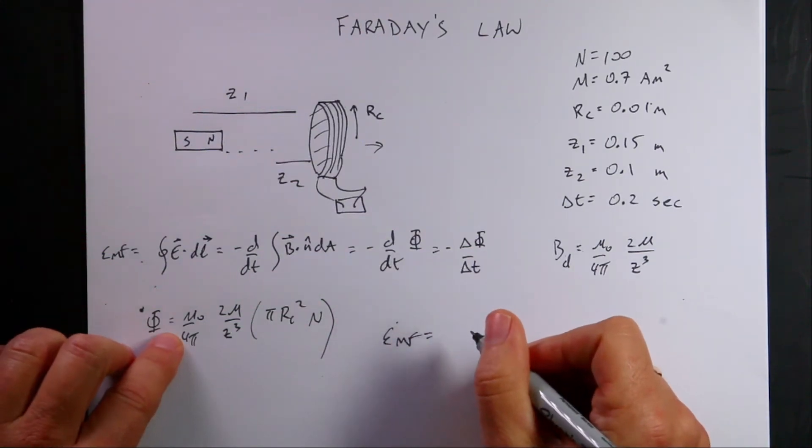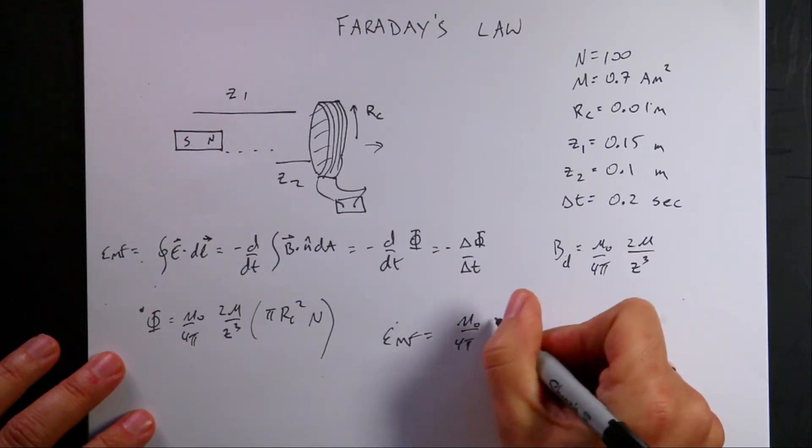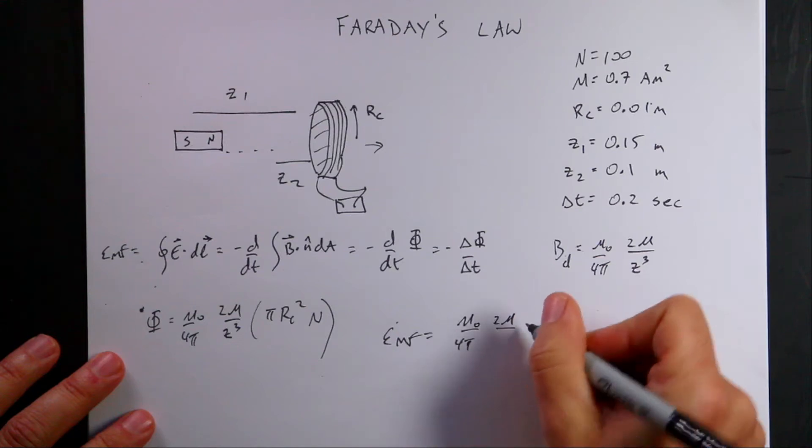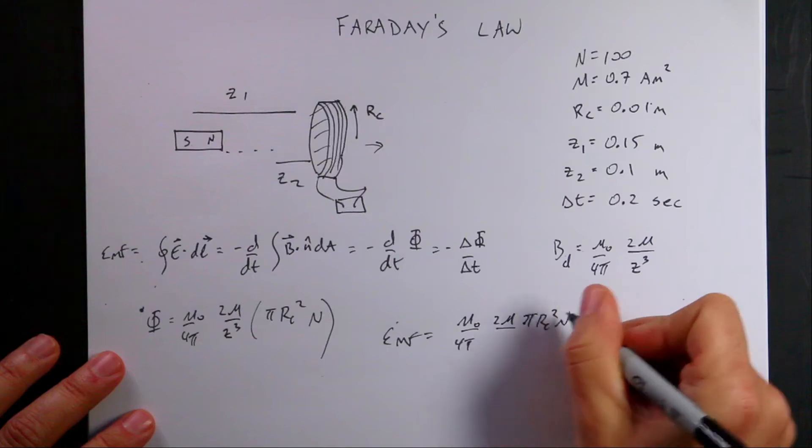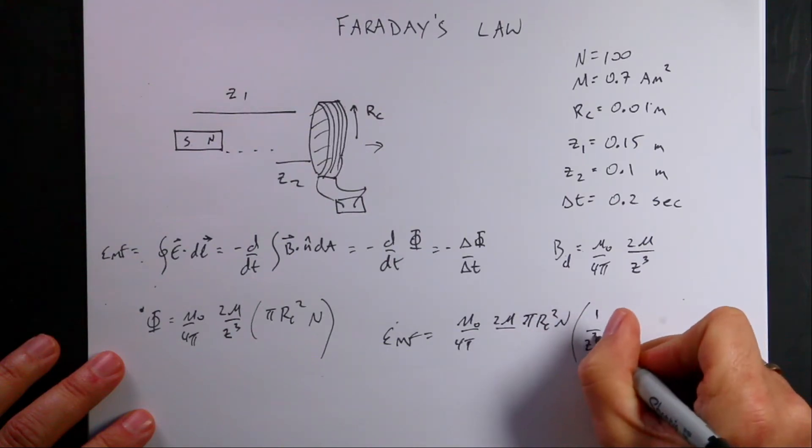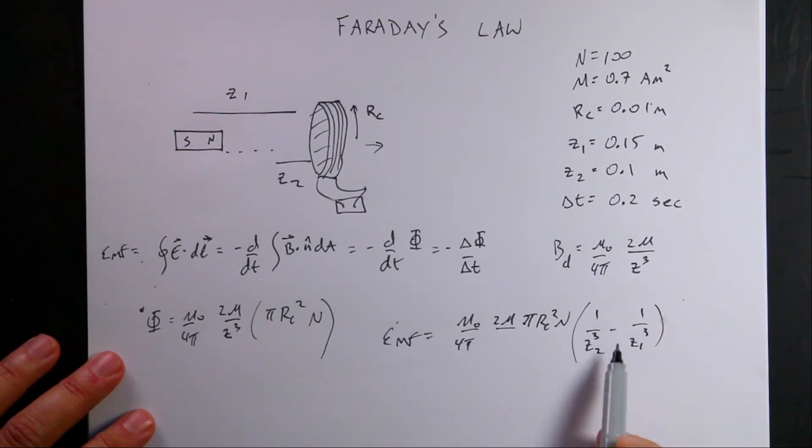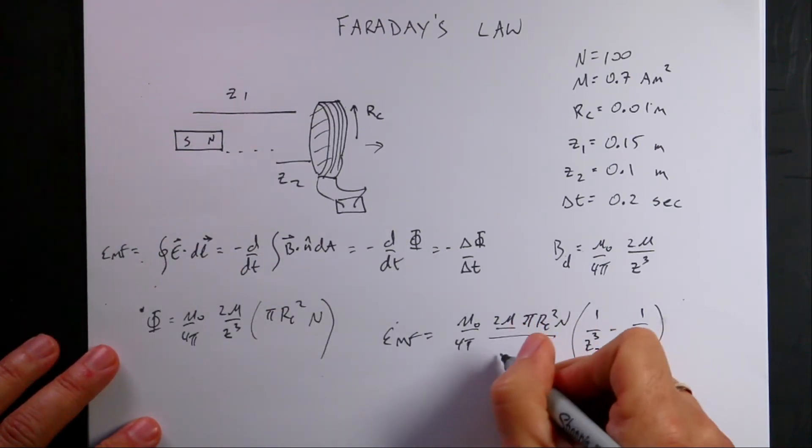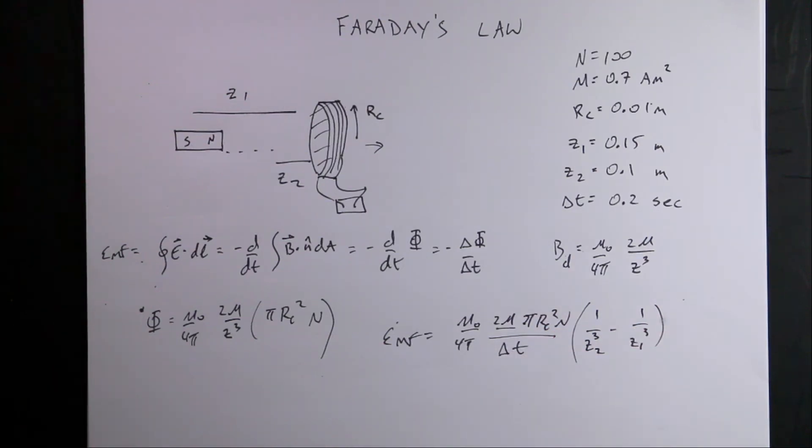EMF is just going to be the change in flux. So it's going to be flux 2. So it's going to be μ₀ over 4π, 2μ, and then I'm going to put in here π Rc squared N times 1 over Z2 cubed minus 1 over Z1 cubed. See what I did there? I factored out all these things that don't change as I move that thing forward. The only thing that changes is that. And then all that I need to divide by delta T. And that's it. That's my induced EMF.